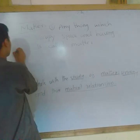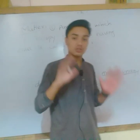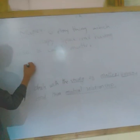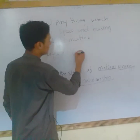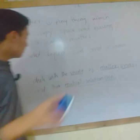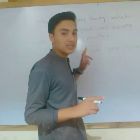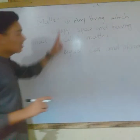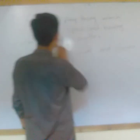Matter has mass. The types of matter are: solid, liquid, gas, and plasma. We will discuss the properties of each — solid properties, liquid properties, gas properties, and plasma properties. Generally, the states of matter are solid, liquid, gas, and plasma.